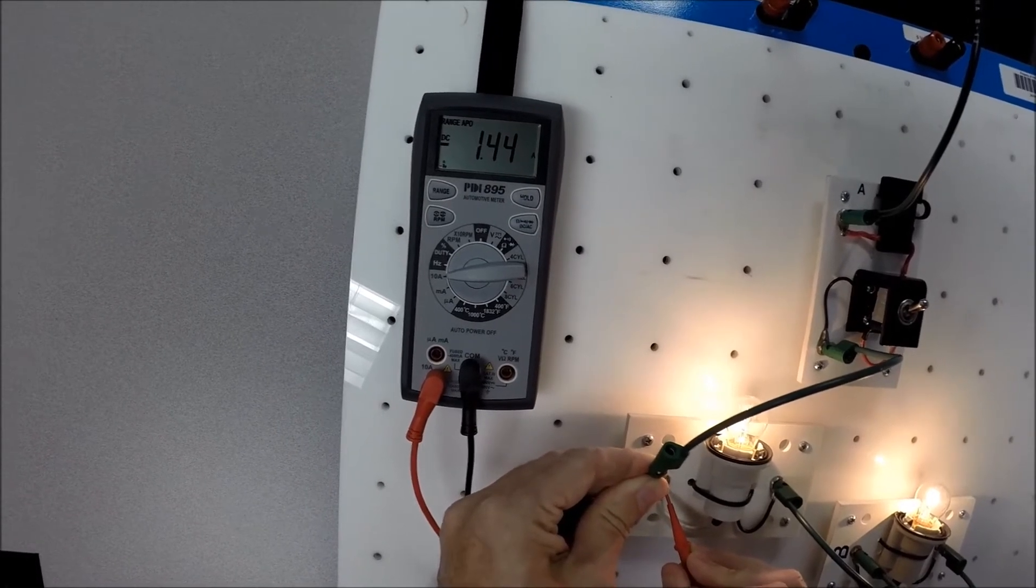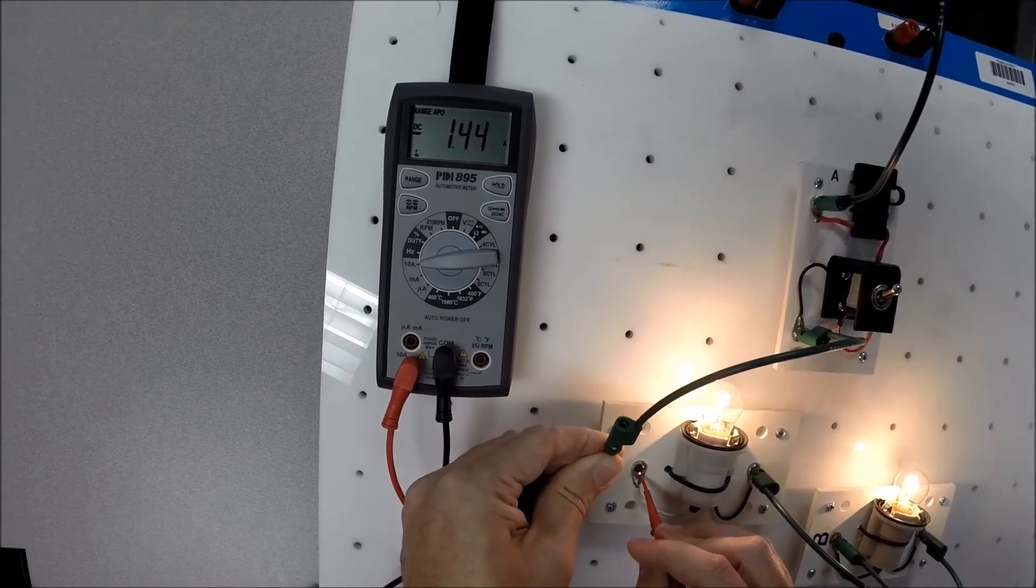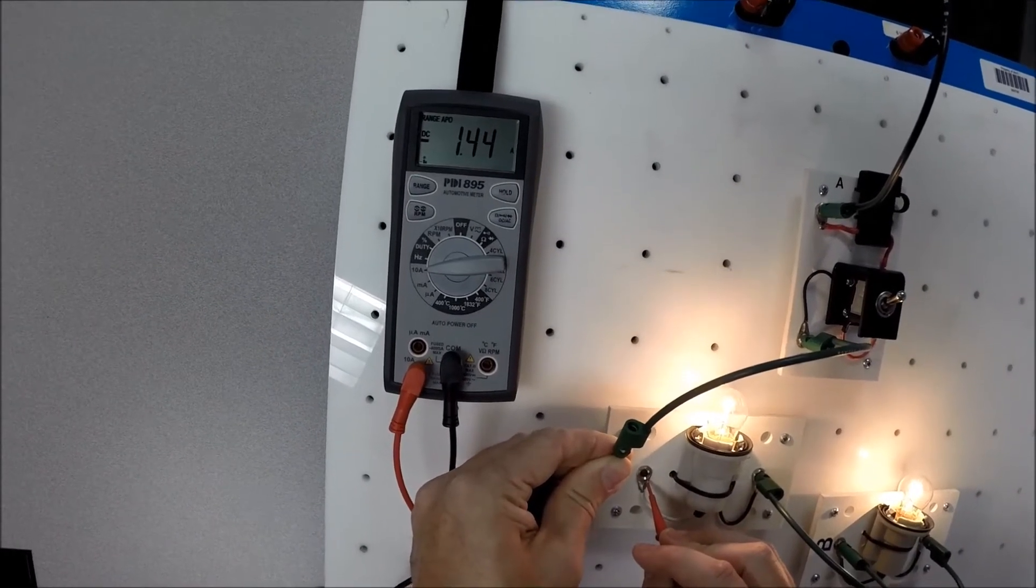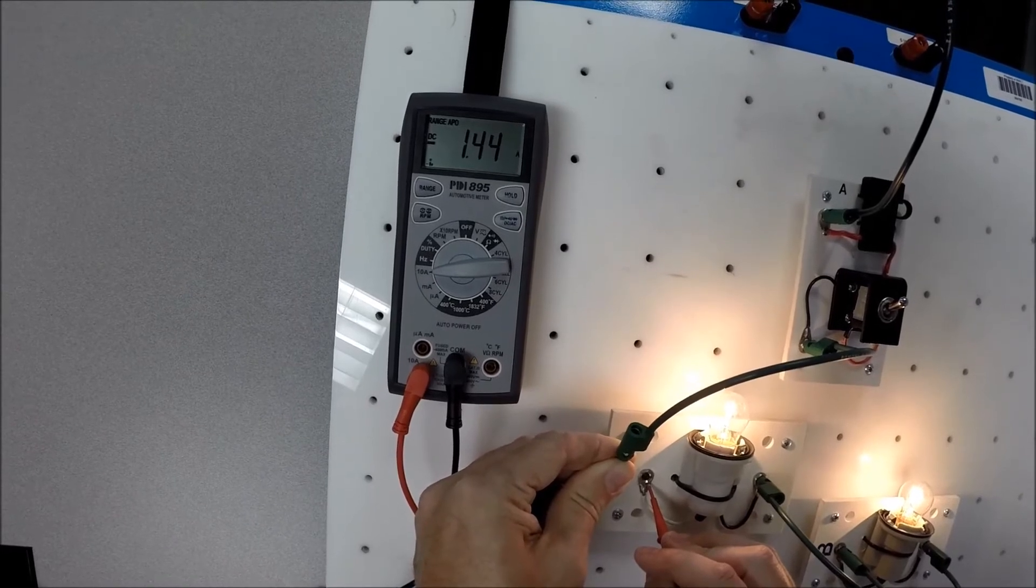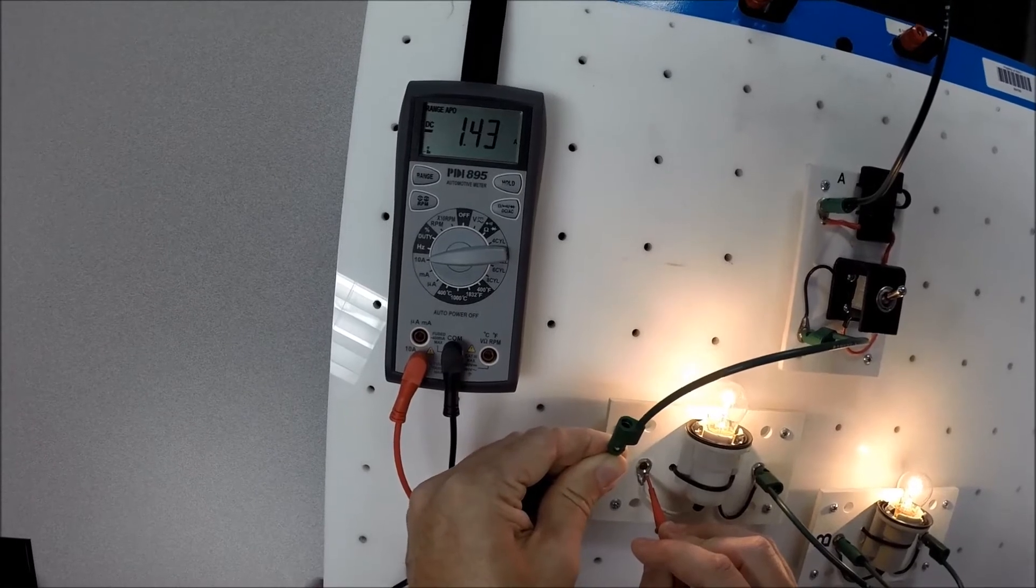1.44 amps. That's how much current we have. All the current flowing through this circuit is flowing through the meter. And that's what you have to do when you measure current. You have to flow all the current through the meter. That's the only way the meter can measure it.